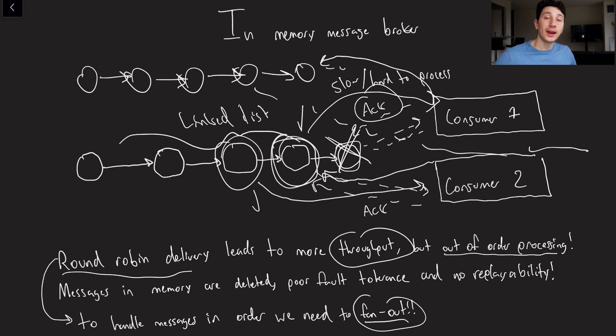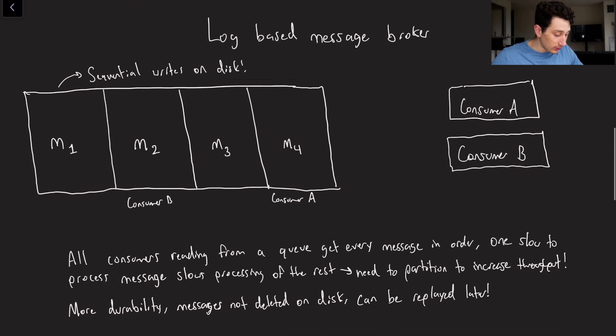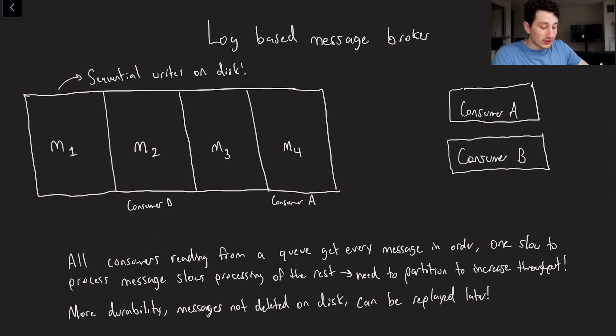Of course, instead of using a write-ahead log, though, which is going to slow our writes down a little bit because writes to memory are always faster than writes to disk, what we could instead just do is effectively the same thing as using a write-ahead log, which is a log-based message broker. So here's what that is going to look like. As you can see, we've got all of this stuff right here, which is on disk. And of course, those are going to be sequential writes since sequential writes on disk are faster than random ones.